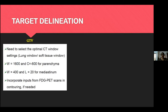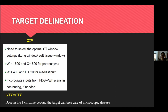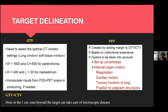Target delineation involves contouring the gross tumor volume (GTV) and planning target volume (PTV). Some institutions include a clinical target volume (CTV), but at our institute we take the GTV as equal to the CTV. The GTV is delineated using the lung window; for tumors near central airways, the mediastinal or soft tissue window is also used to identify the medial margin. PTV is added based on institutional experience, accounting for setup uncertainties and internal organ motion.